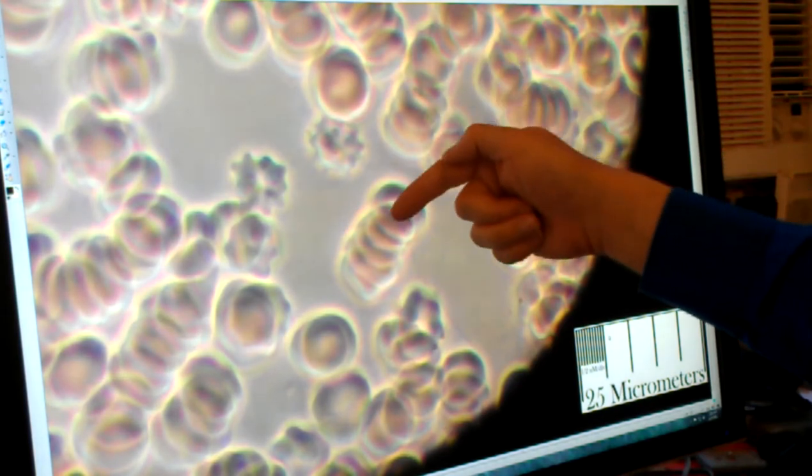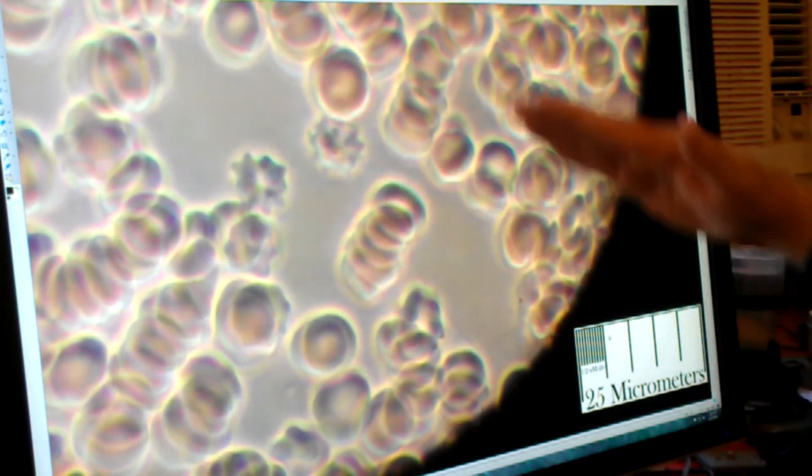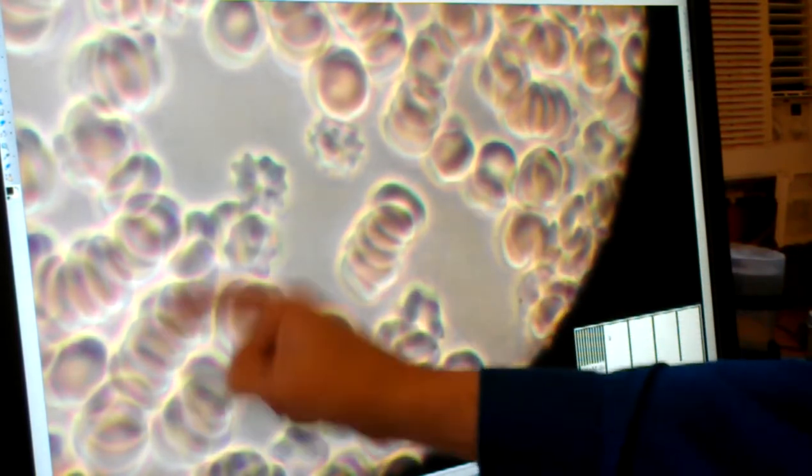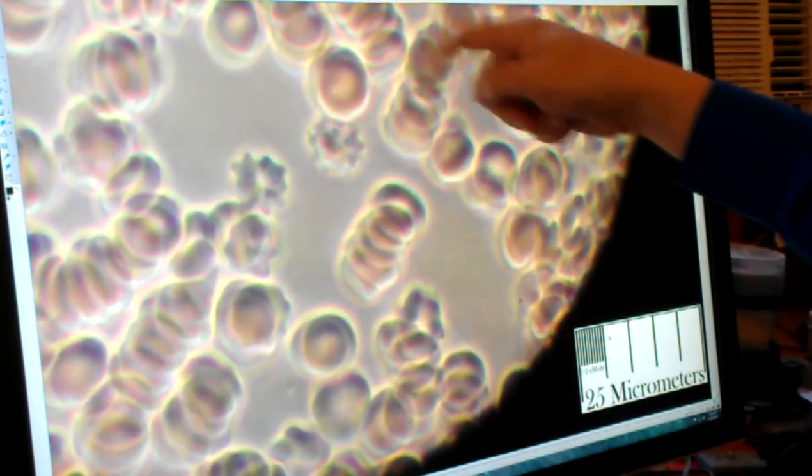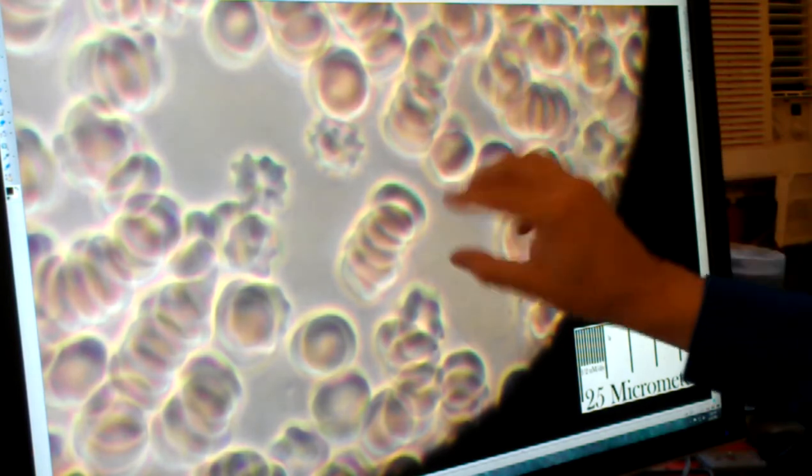So these, you can see they're stacked up like pancakes. There's a bunch of them here. This is because the blood had started to coagulate on the slide.